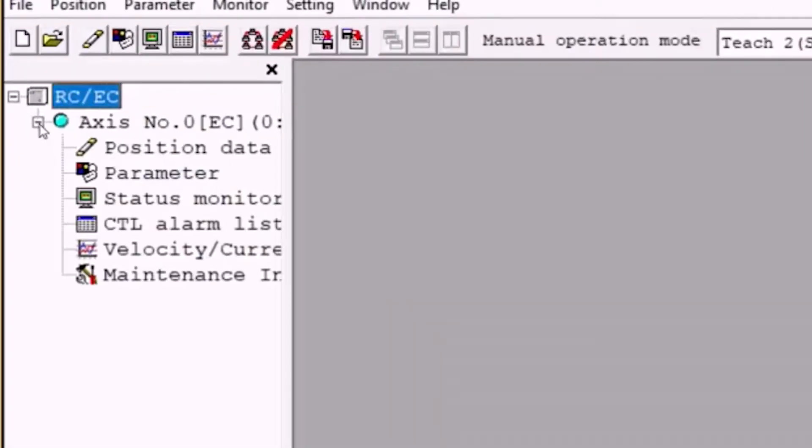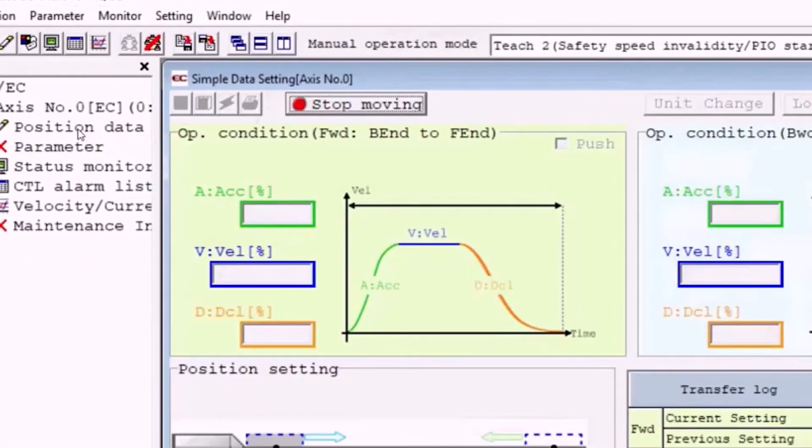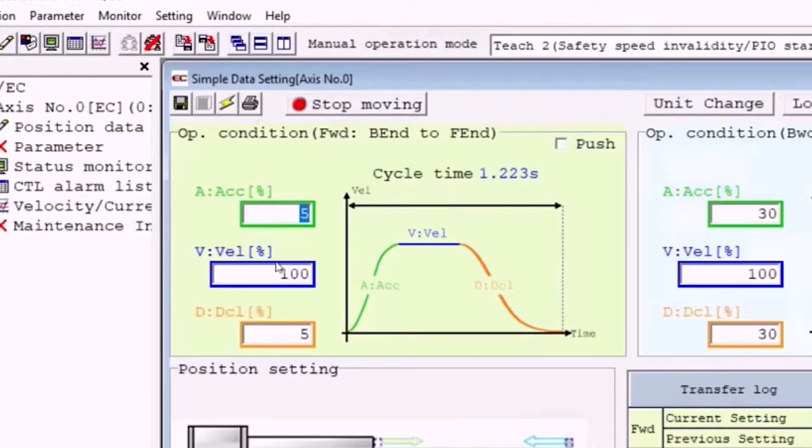Next, click the drop-down menu under axes number zero and click on position data. We'll first edit the operation condition titled Base End to Far End, shown here in the green box, where we can easily change the parameters of the actuator.